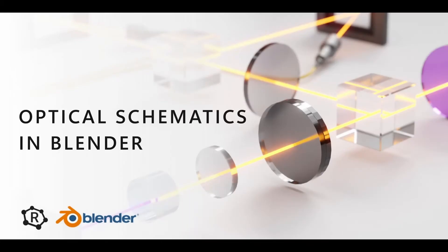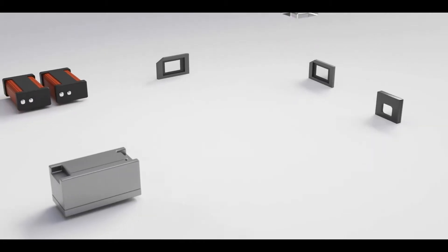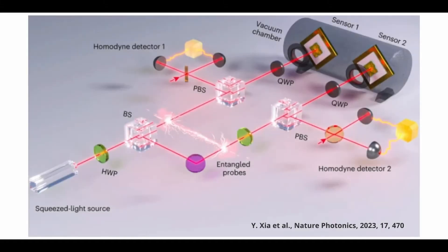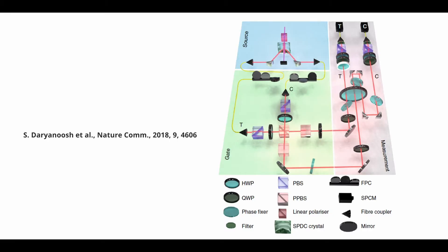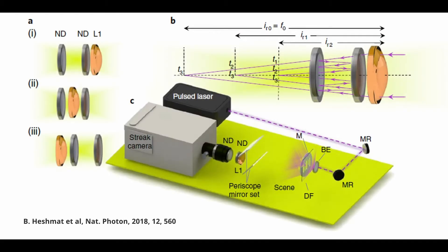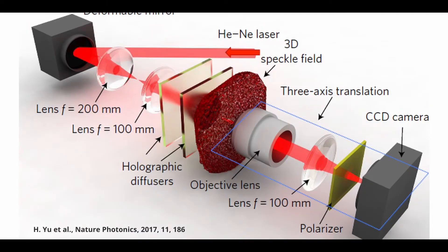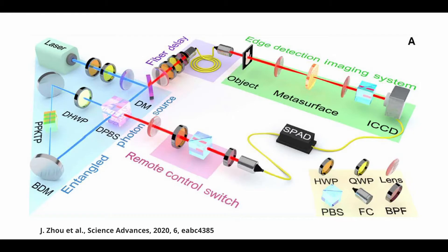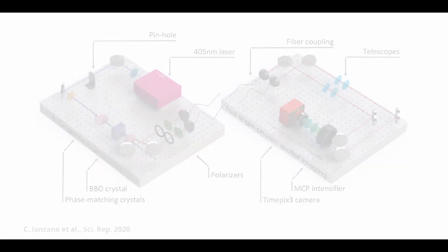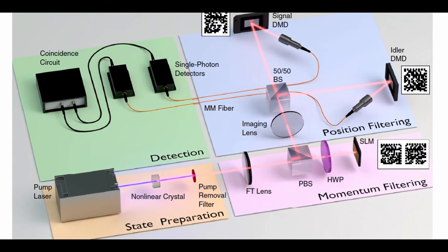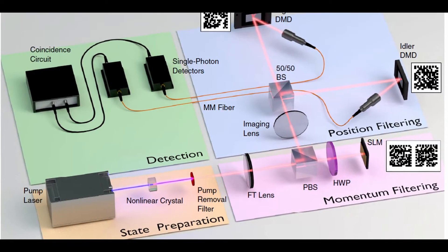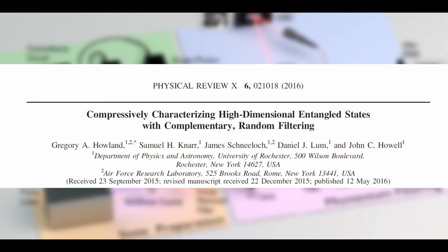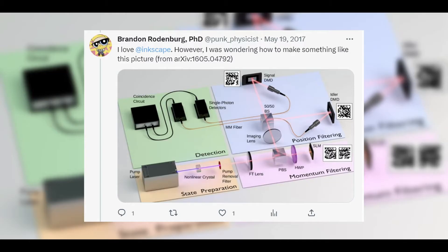Hi, welcome back. In this video, I'm going to walk you through how you can easily create 3D schematics of optical setups in Blender. We're going to focus on simplified schematics, where most optical components are illustrated as simple geometries, rather than being drawn to match how they look in real life. Besides being aesthetically pleasing, these schematics are a really useful way to give an overview of an optical setup, and so you'll encounter them as publication figures quite a lot. To showcase how Blender is really good for this, I'll be partially recreating a graphic from a paper in Physical Review X from 2016 titled 'Compressively Characterising High Dimensional Entangled States with Complementary Random Filtering'. I actually came across an old tweet asking what software could be used to create this figure, so I thought this one would be a good one to try.